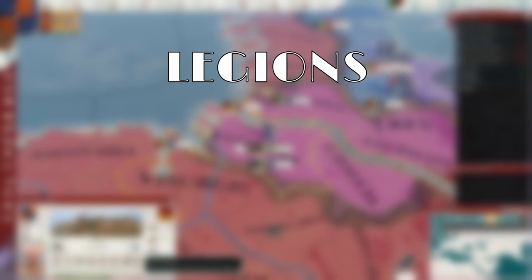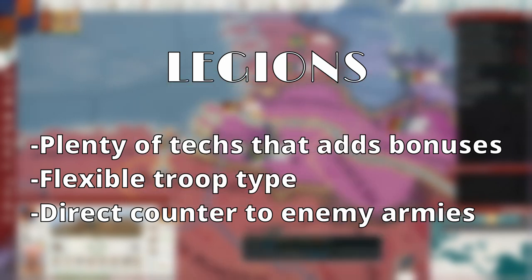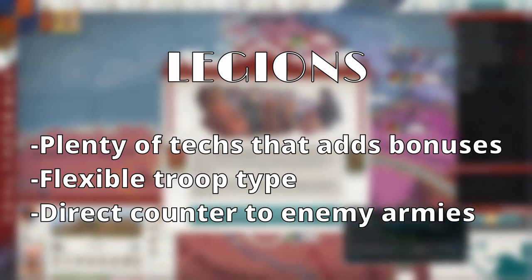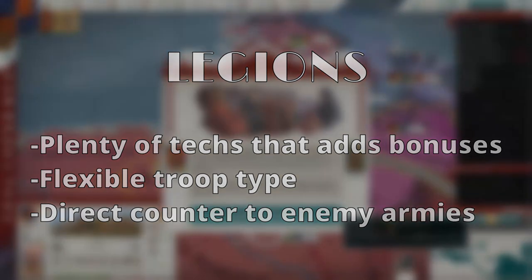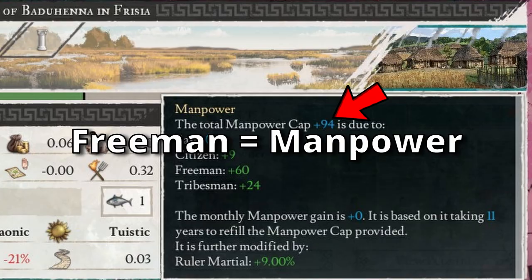Legions, on the other hand, are career soldiers that dedicate their day job to training. You get to decide which cohort types you want to specialize in, therefore making legions much stronger at countering enemy armies. The amount of levies you get depends on your population, so having a large population means lots of levies. As you can see here, my local population of citizens and freemen contribute a total of 94 people to my manpower pool, so you want to aim for a lot of freemen if you want a large army.